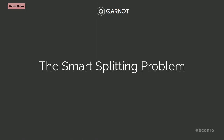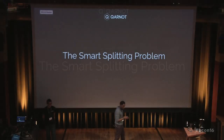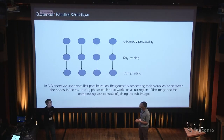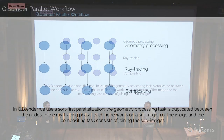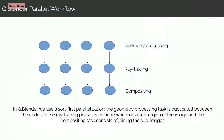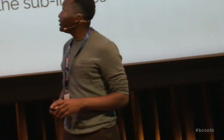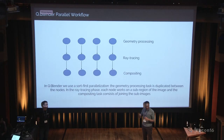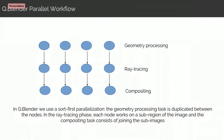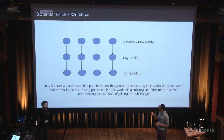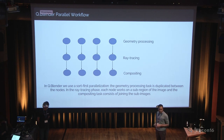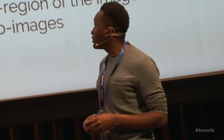Now we are going to talk about the smart splitting problem. We are trying to make distributed rendering, and for this we use a classical representation of how you can formulate this process in a distributed manner. This is a general model that exists in the literature for parallelizing the rendering process.